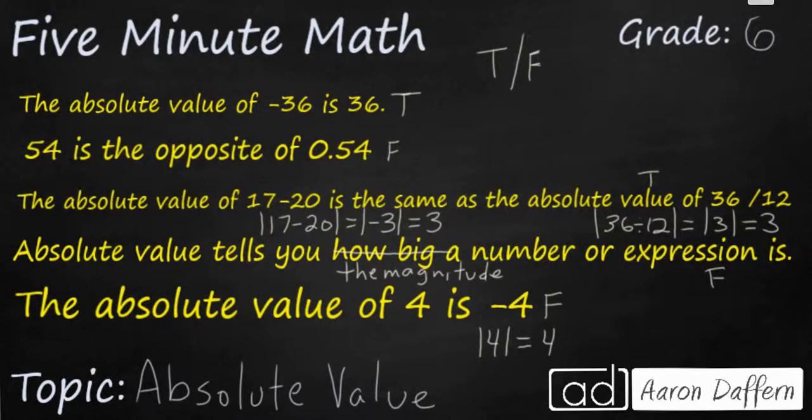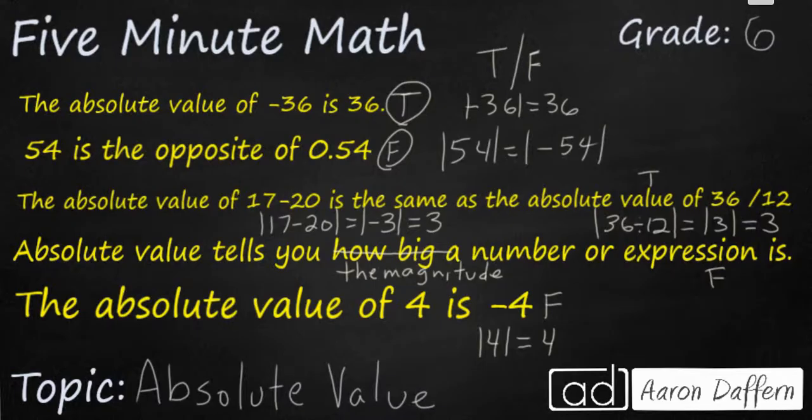The first statement is true because the absolute value of negative 36 equals 36. The second statement is false because 54 is the opposite of negative 54, not 0.54. They're opposites because both of their absolute values are equal. The third statement is very long but it's also true because 17 minus 20, its absolute value is 3, and 36 divided by 12, its absolute value is also 3.